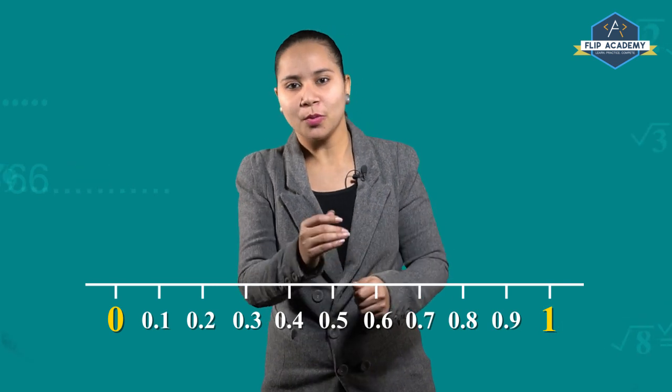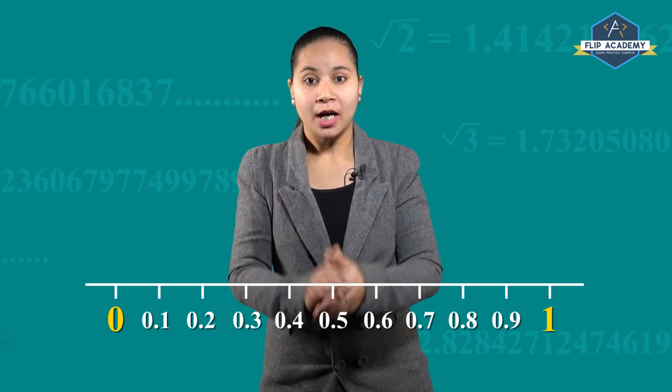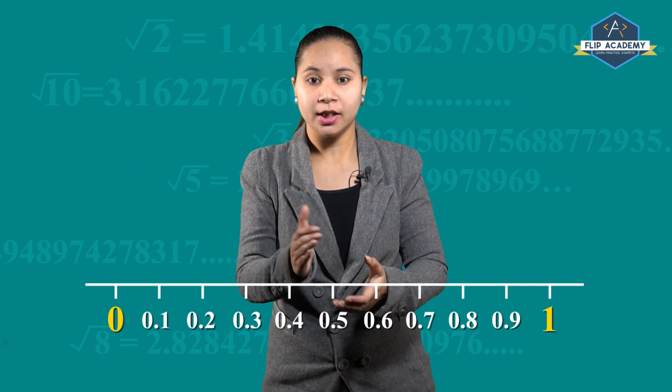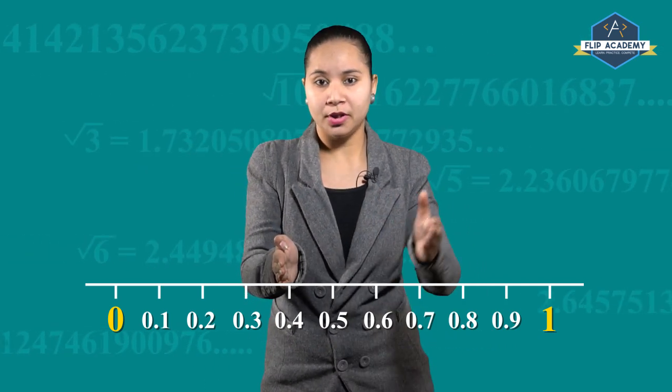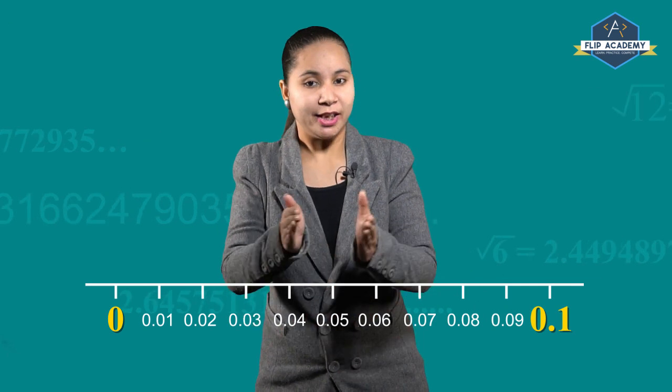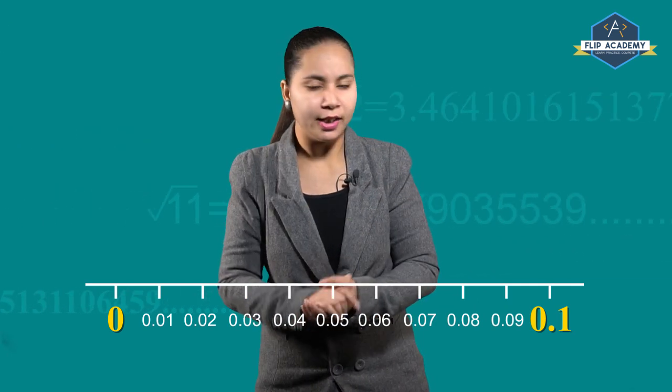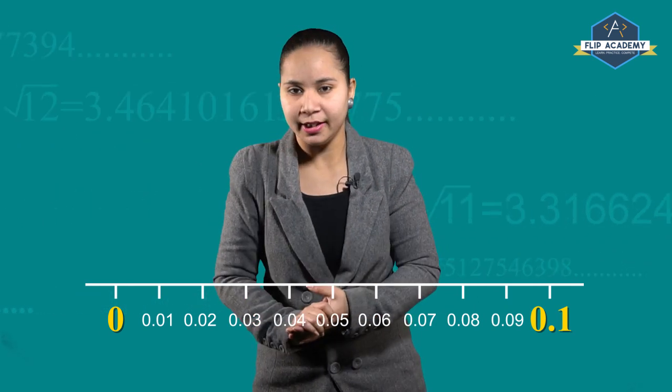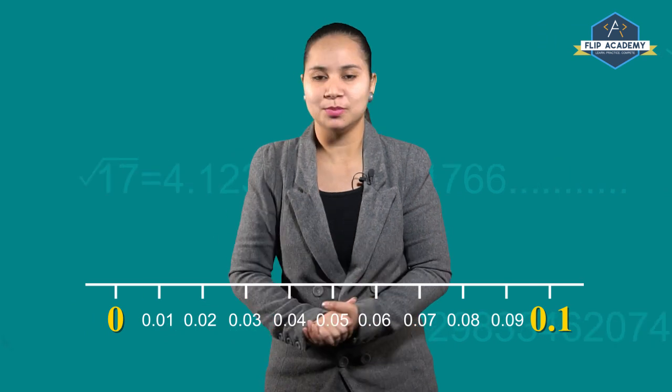Between zero and one, there are a lot of rational and irrational numbers. If we expand between zero and one, we get 0, 0.1, 0.2 and so on. And if we expand between 0 and 0.1, will there be any exact value? No — there will be no exact value there. Such numbers are known as irrational numbers. For example, square root 2, square root 3 and so on.